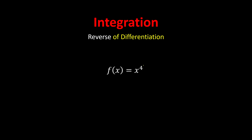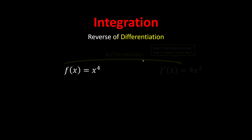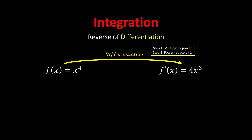If you still remember how to differentiate, we just take the power down, multiply by the power, and the power reduces by one — this is how we get 4x to the power of 3. So for differentiation: step one, multiply by the power; step two, the power reduces by one. Since integration is the reverse, we can use the stocking concept and try to find the formula for integration.